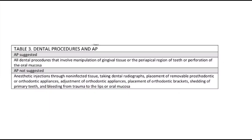Antibiotic prophylaxis should be given for all dental procedures involving manipulation of gingival tissue, the periapical region of the tooth, or perforation of the oral mucosa. It is NOT required for: anesthetic injections through non-infected tissues, dental radiographs, placement of removable prosthetic devices or orthopedic appliances, placement of orthodontic brackets, shedding of primary teeth, or bleeding from trauma to the lips or oral mucosa — unless the patient already has one of the high-risk conditions previously discussed.